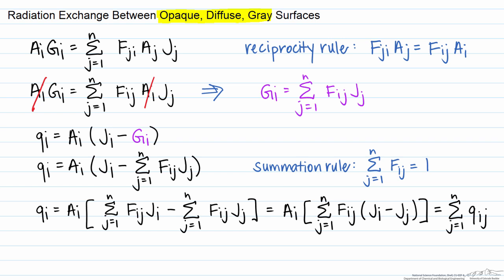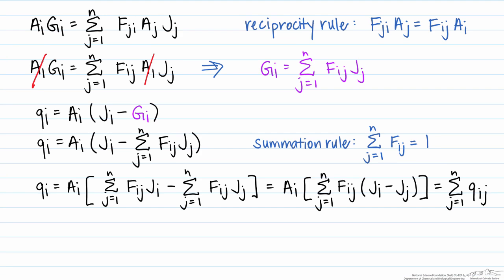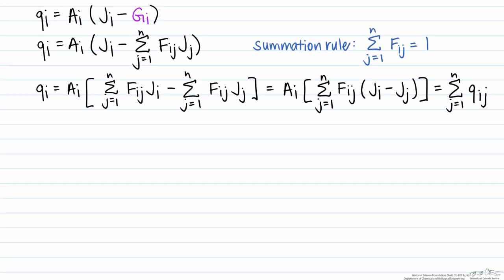Now we can also write qi as Ebi minus Ji, where Ebi is the emissive power of a black body, 1 minus our emissivity, divided by the emissivity times the area of the surface, and therefore this is going to equal the sum from j equals 1 to n,